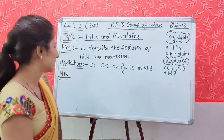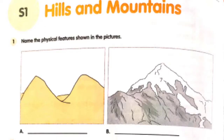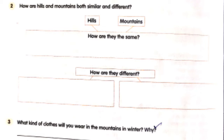Now let's apply your knowledge. Open page number 10 of your workbook — Hills and Mountains. Question 1: Name the physical features shown in the picture — write the names for Picture A and Picture B. Question 2: How are hills and mountains both similar and different? Write the differences and similarities between hills and mountains.